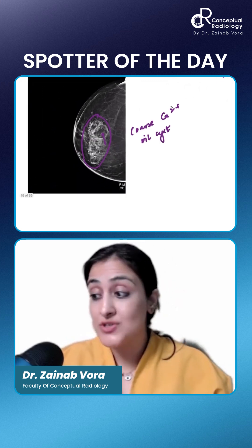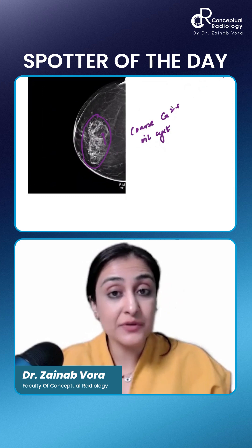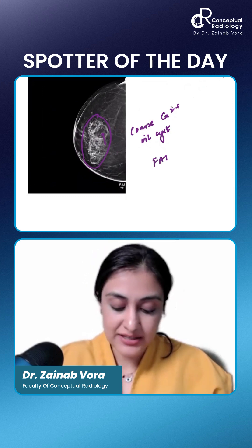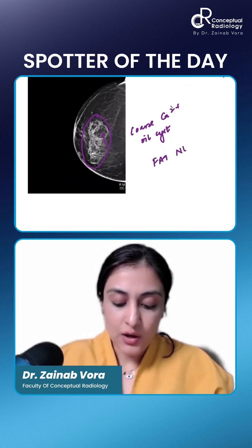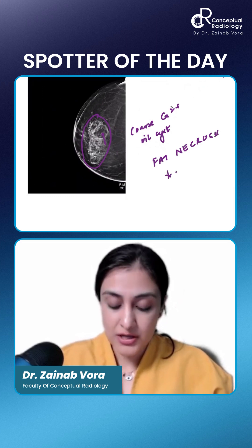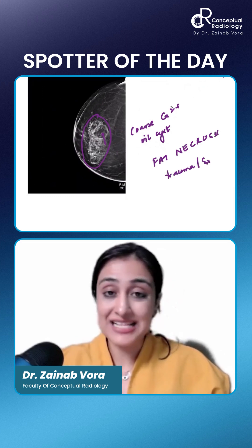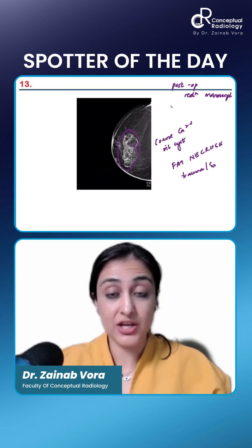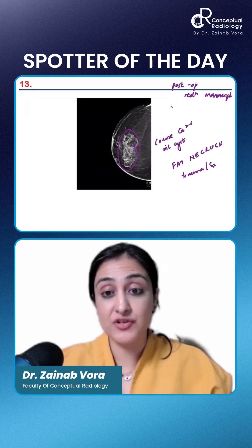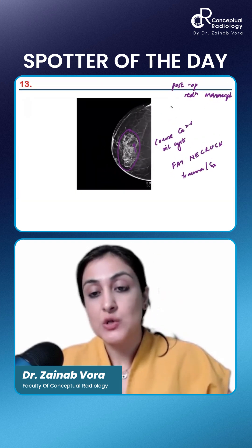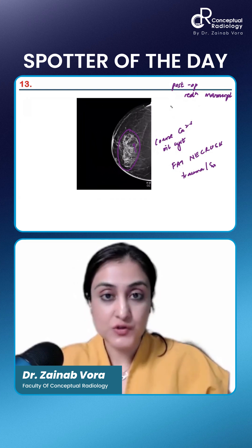On post-GAD MR, you will see thin enhancement with fat suppression. This is what is fat necrosis. Always you will get history of trauma or surgery. So in this case it's trauma, and the calcification morphology is also benign calcification — amorphous calcification is how you would describe this. This is fat necrosis.